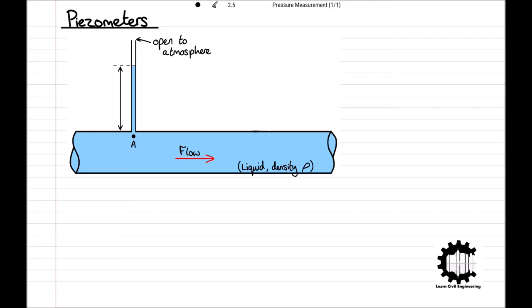As the liquid within the pipeline is under pressure it will rise up the tube to form a column of liquid with height h_a.